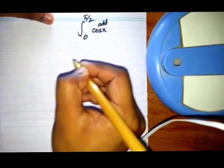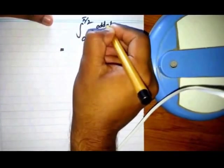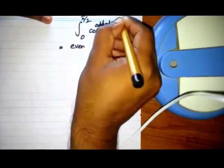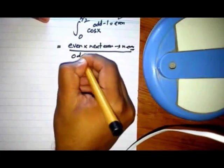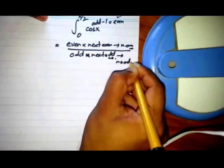This trick works by subtracting 1 from the odd power to get an even number. In the numerator, you multiply the first even number with the next even number and so on. In the denominator, you multiply with the first odd number, then the next odd number, and so on till the end.